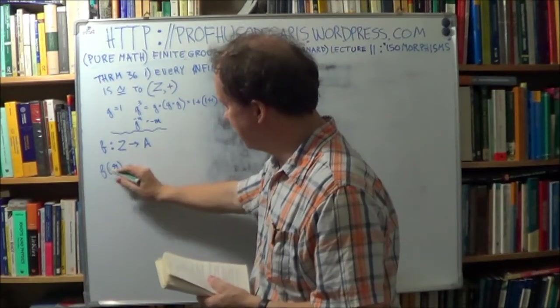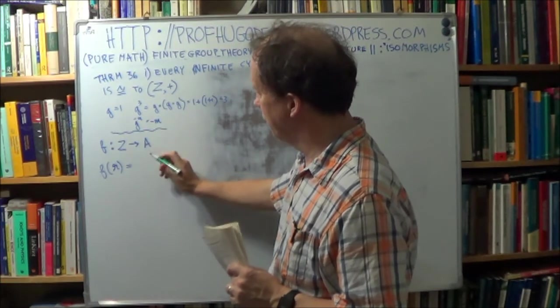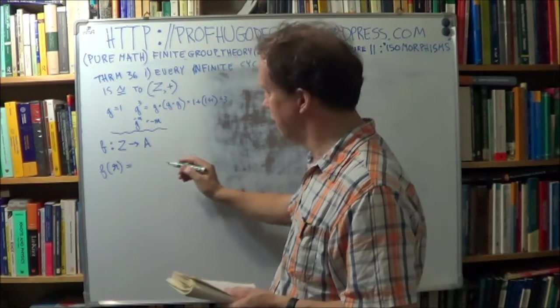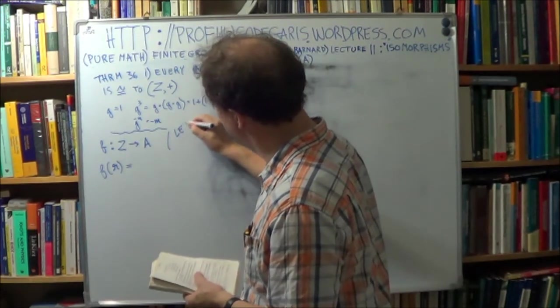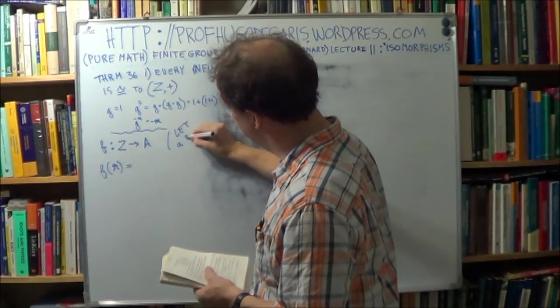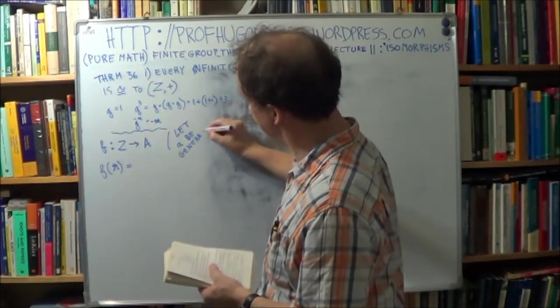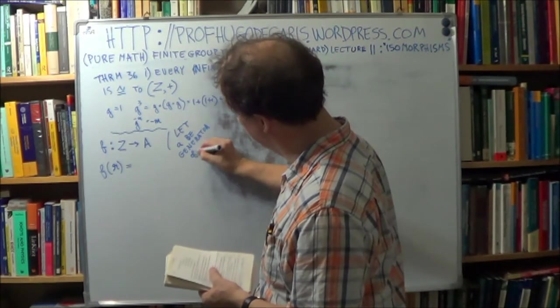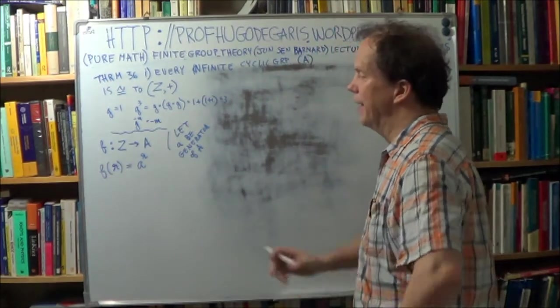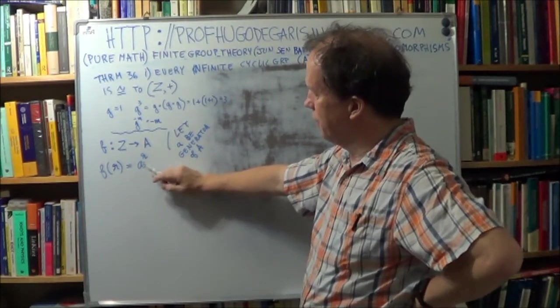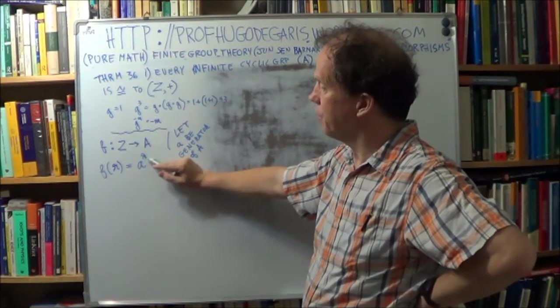Okay, so let's suggest that we're mapping this into this infinite cyclic group. Okay, so we have a generator. So let little a be the generator of this infinite cyclic group A. The generator of A, big A, right? So this will be of this form, right? Now, A is an infinite cyclic group, it has a generator, so A to the R will be an element of A, okay? Because it's of the right form.